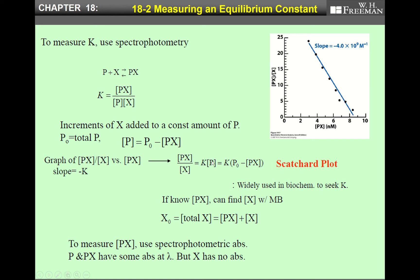We substitute this one into the equilibrium constant equation and then we get PX over X equals K multiplied by (P₀ minus PX). Taking this PX over X as Y and PX as X, and plotting this Y versus X, you get a straight line. This is the linear equation where the slope is minus K and Y intercept is K multiplied by P₀.